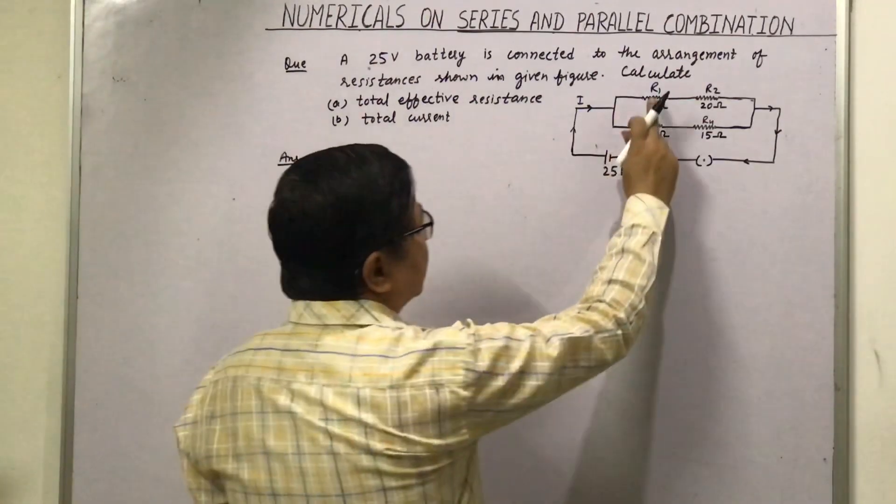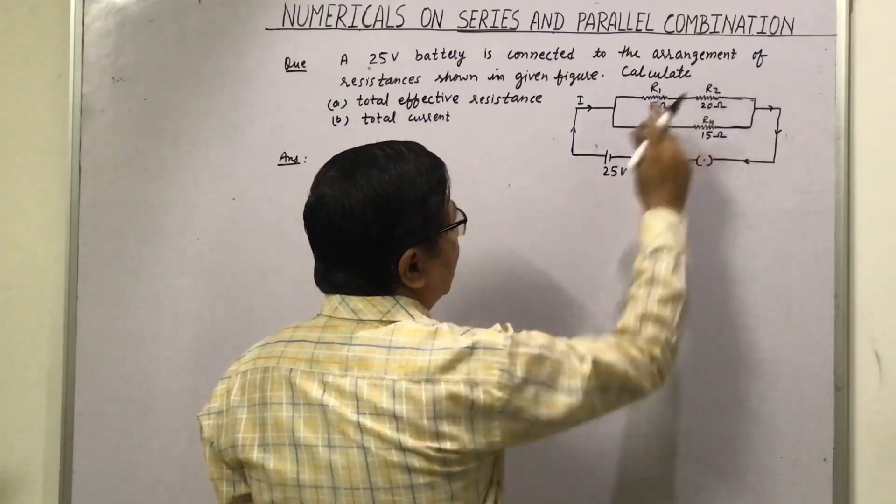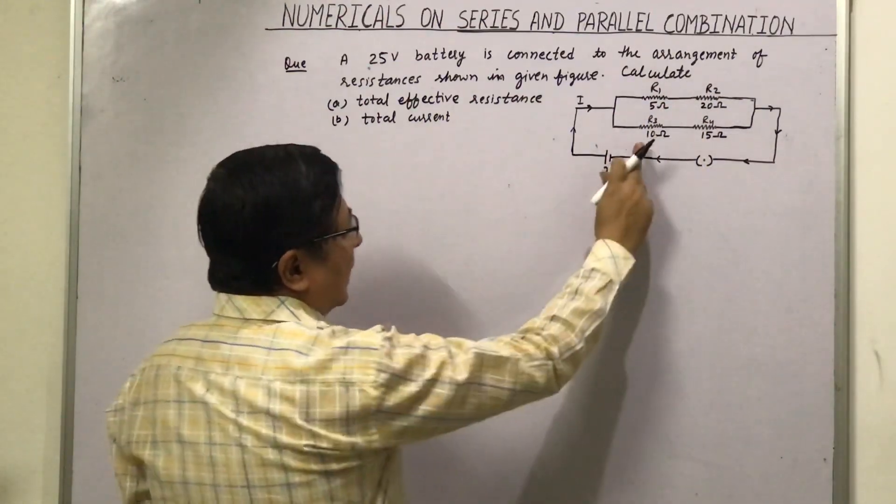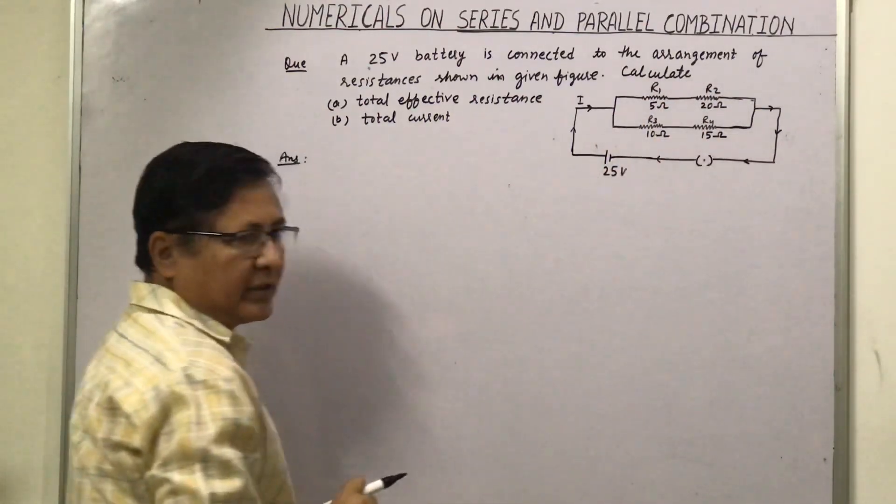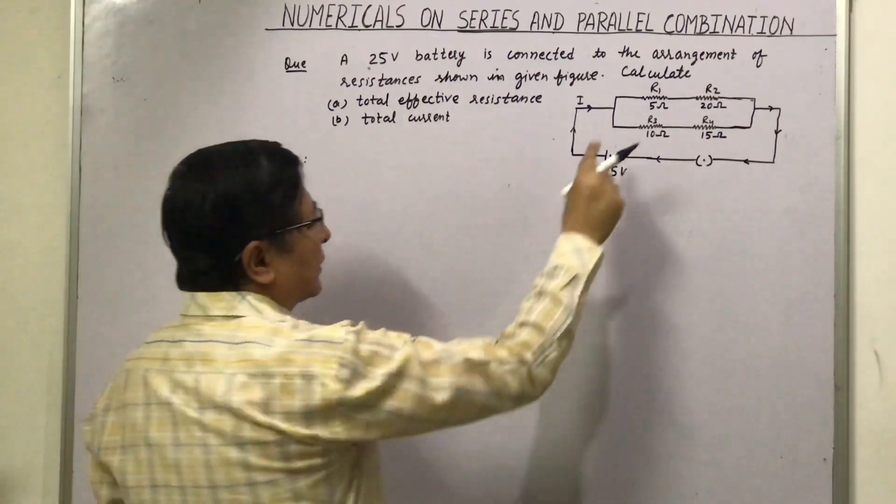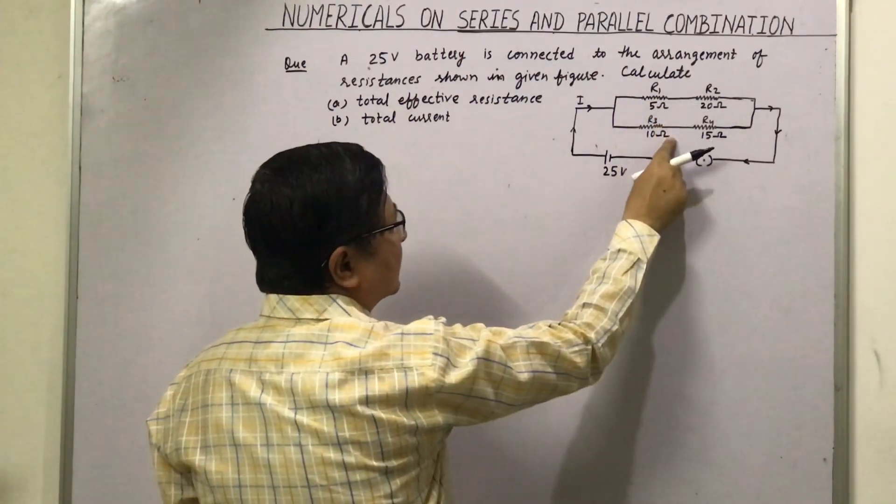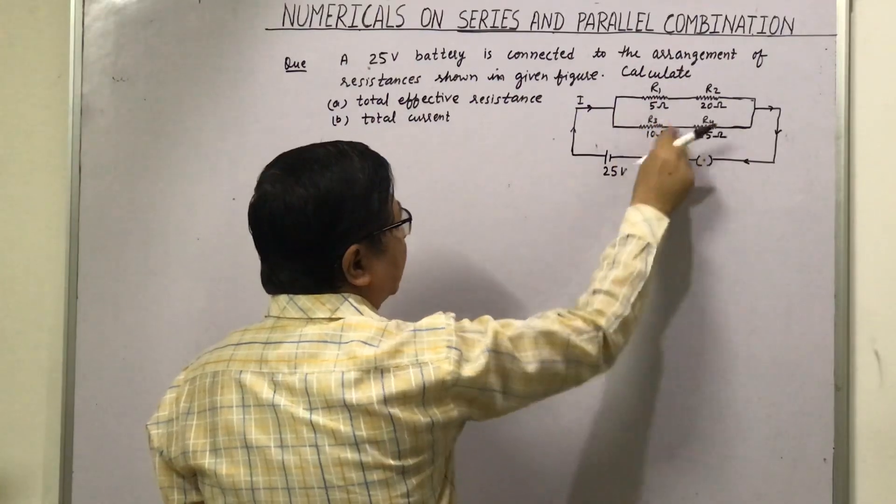Now in this, if you see, these two are connected: R1 and R2 are connected in series. R3 and R4 are again connected in series. And the combination of these two and the combination of these two are connected in parallel.